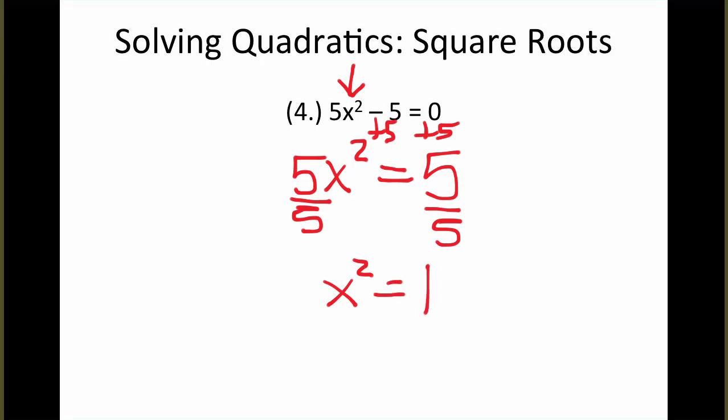And to solve this then is just like the previous two examples. We get the square root of each side, and the square root of 1 is a positive or a negative 1. So x, in this case, is equal to a positive or a negative 1.